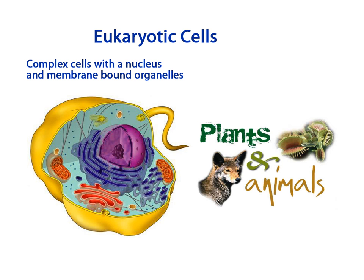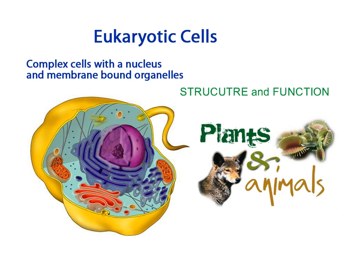By the end of this unit, you will have to be able to visually identify each of the major organelles in a eukaryotic cell, state their function, and describe the interrelationship of the organelles in eukaryotic cells.